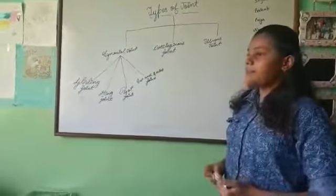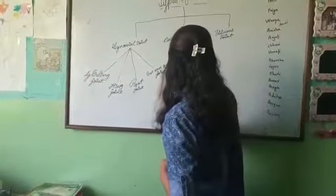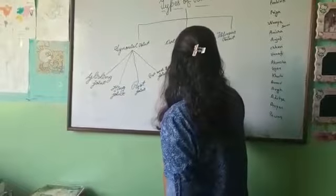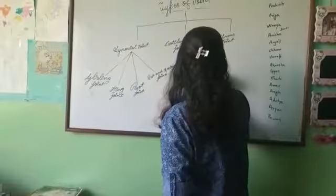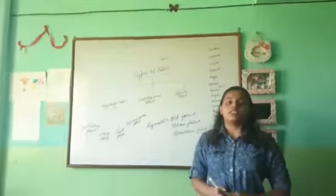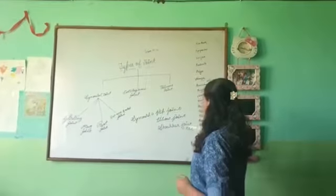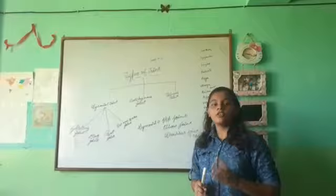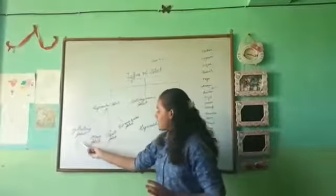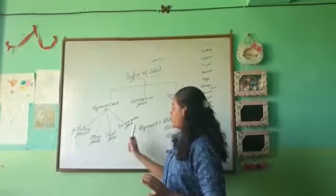The examples of synovial joint are hip joint, elbow joint, shoulder joint, etc. They are of four types: gliding joint, hinge joint, pivot joint, and ball and socket joint.